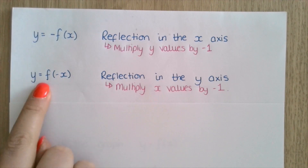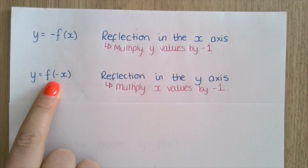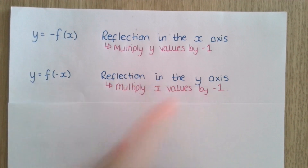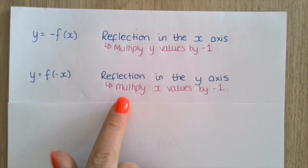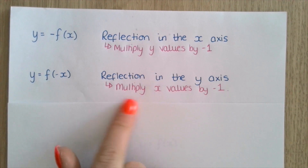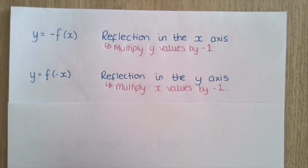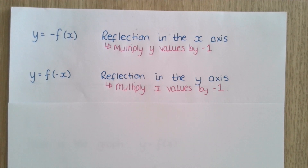Finally, y equals f of minus x, where the negative is inside the brackets. This is a reflection in the y axis, because this time we're multiplying the x values by negative 1. In the next video, I'm going to show how we apply these transformations to graphs of y equals f of x.